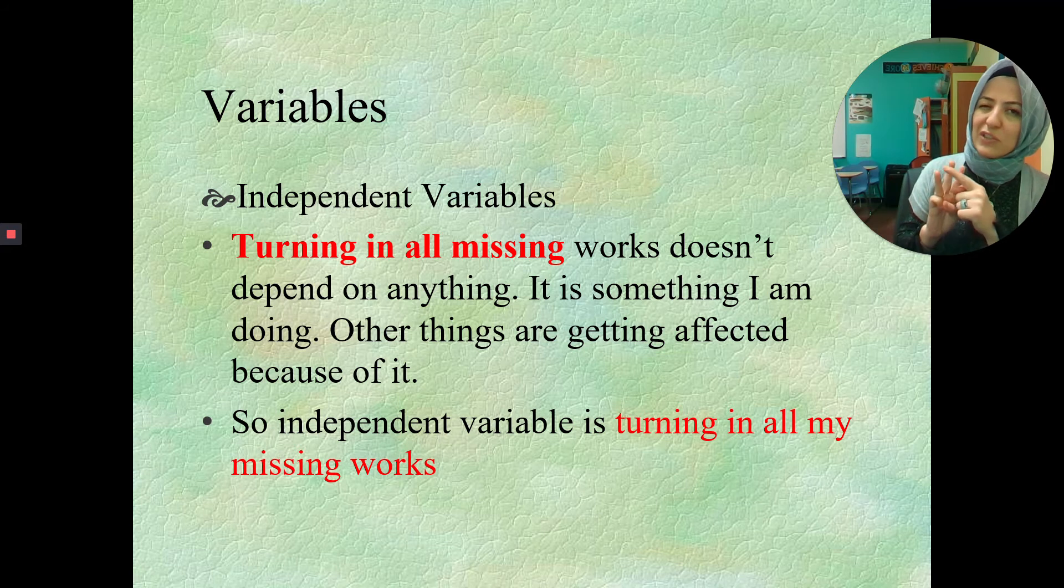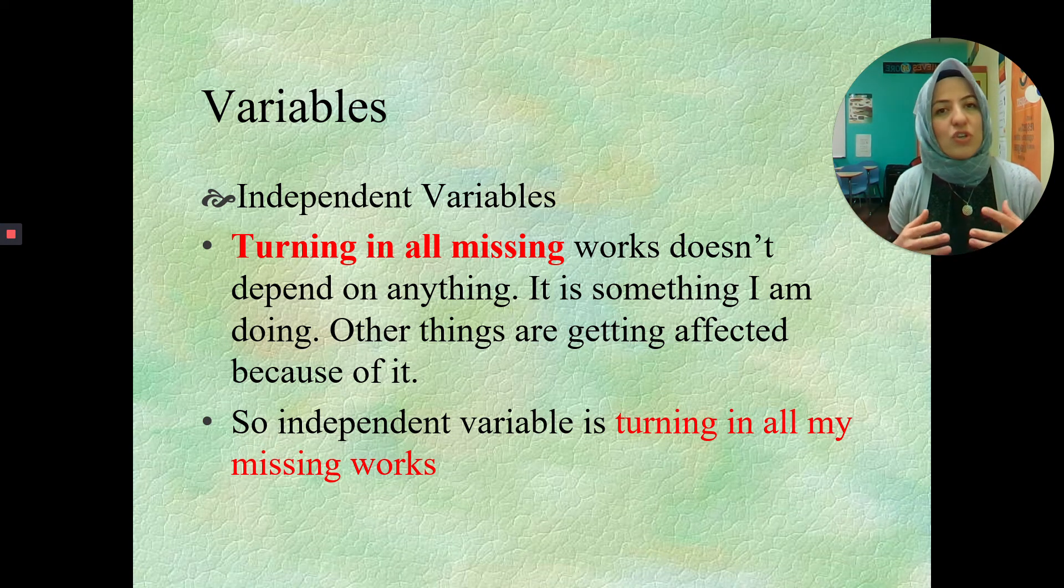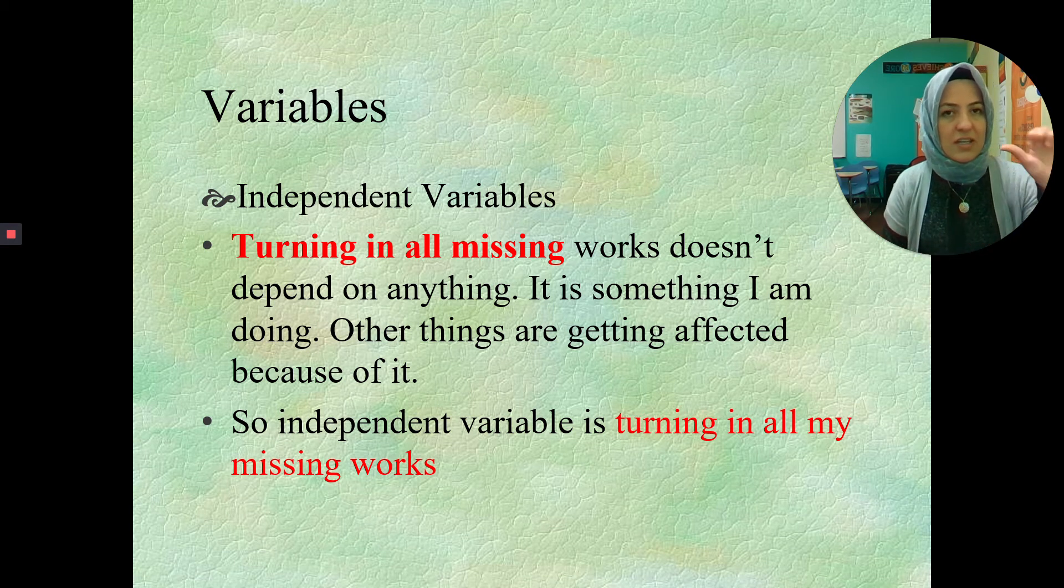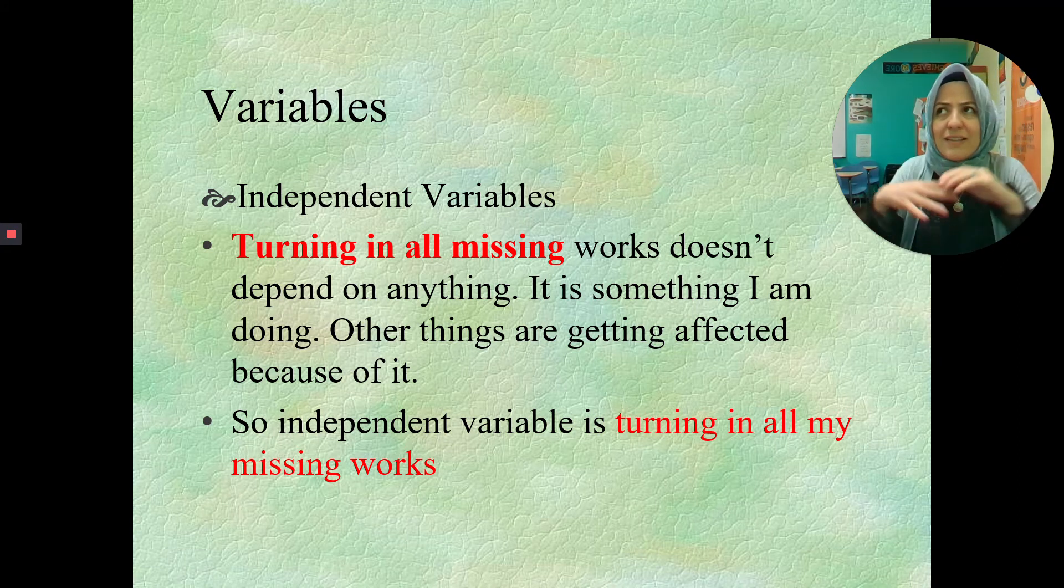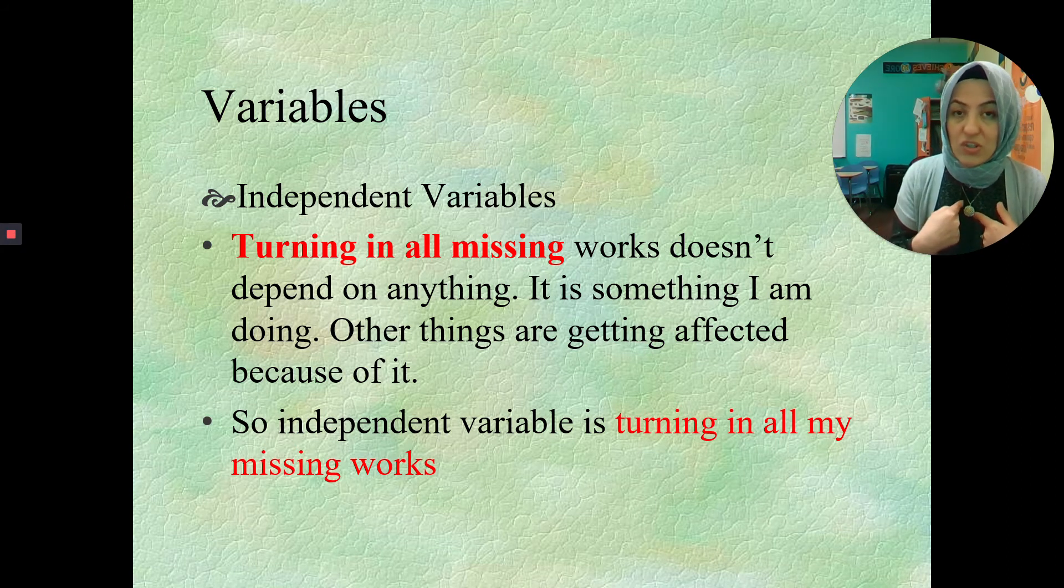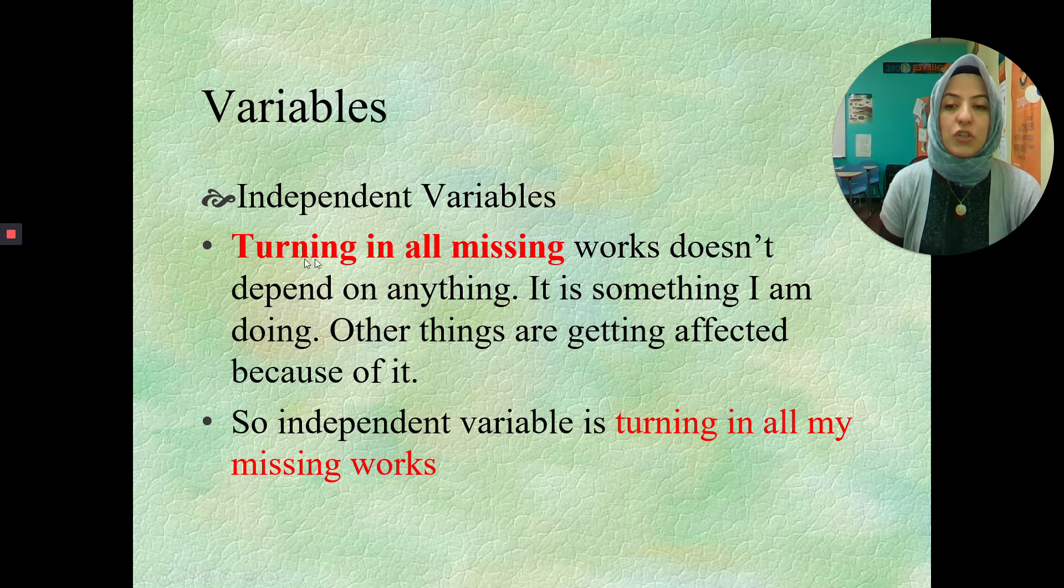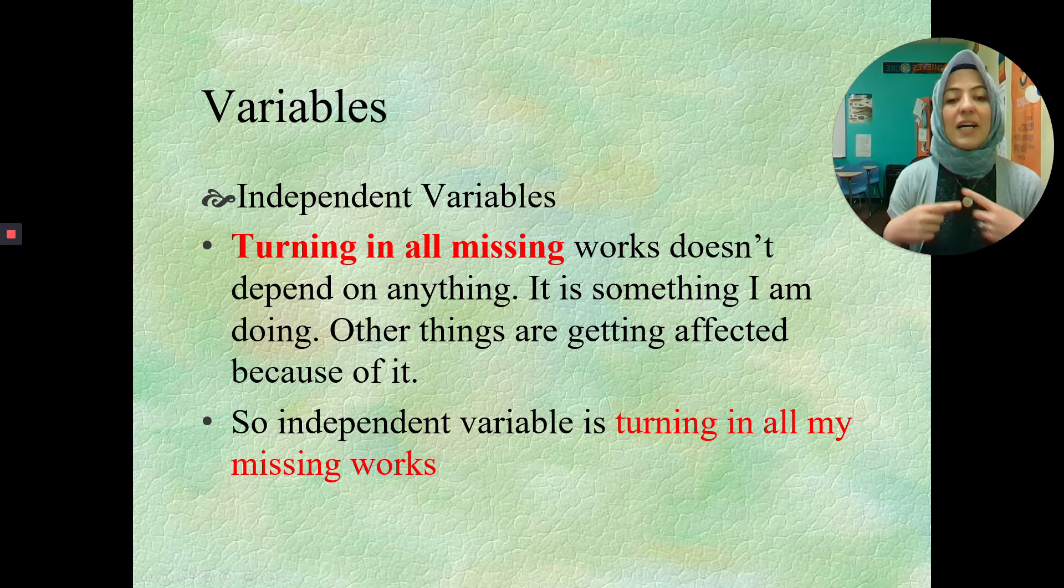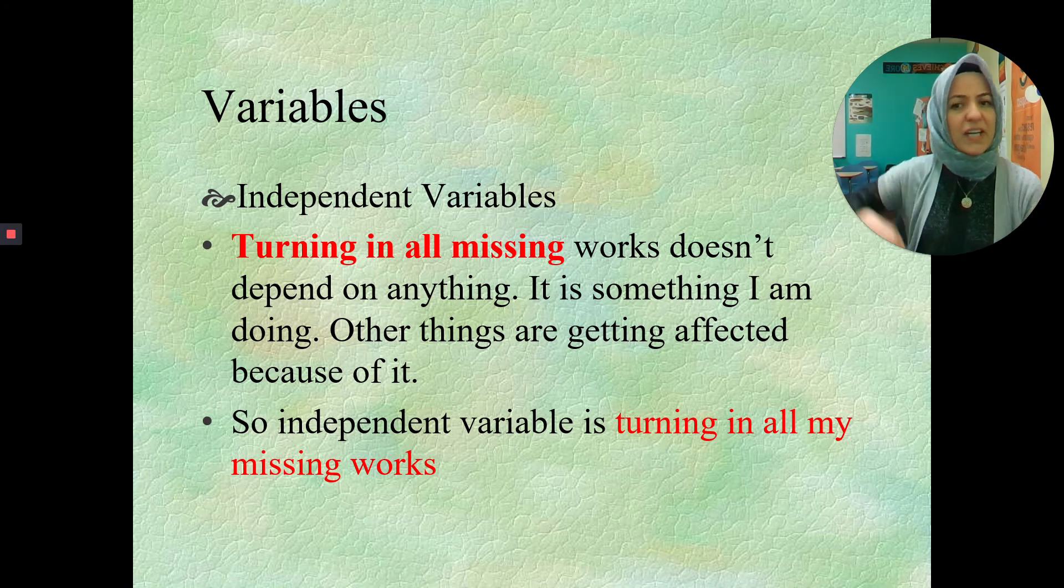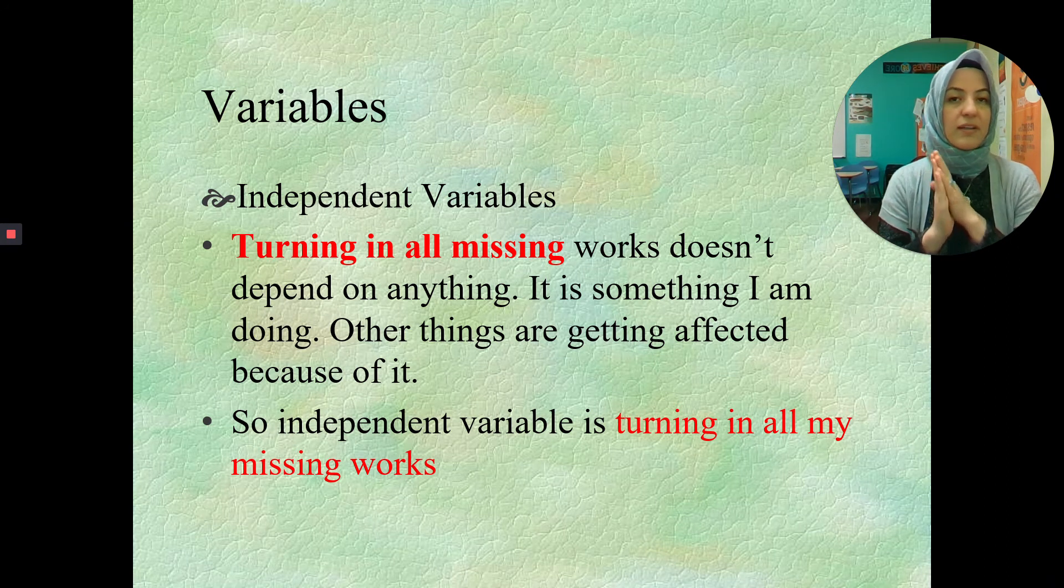So as you know, we have three variables. Well, control variables are not like actual variables since it's not something we have to find out and change anything. We usually go with two variables, which is dependent and independent. So dependent variables, we already just talked about it. Now the second one is independent variable. So it's independent, but something that we have to change. So we have to do something about it, like turning in all the missing works. Are you guys looking here? Turning in all missing works doesn't depend on anything. It is something that I am doing. Other things are getting affected because of this, because I am turning in the assignments, because I am doing some work. So independent variable is turning in all my missing works. That's my independent variable.